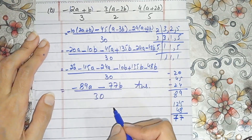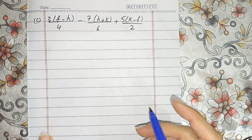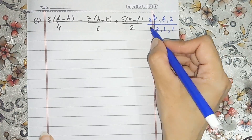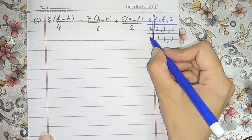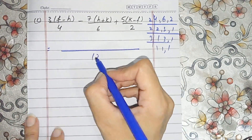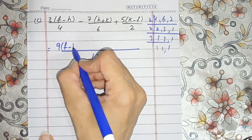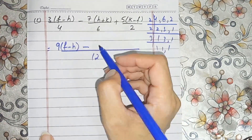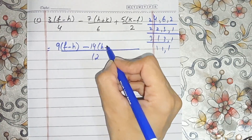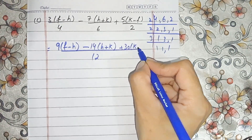This is the answer of part b — now it's solved. For part c we take the LCM of 4, 6, and 2. Factoring: 2, 3, and 1; again 2, 1, 3, and 1; then 3 times 1 is 1. So 3 times 2 is 6, 6 times 2 is 12. The LCM is 12. With 4: 3 times 12 gives 9(f minus h). With 6: 2 times 12, then 7 gives 14(h plus k). With 2: 5 times gives (k minus f).